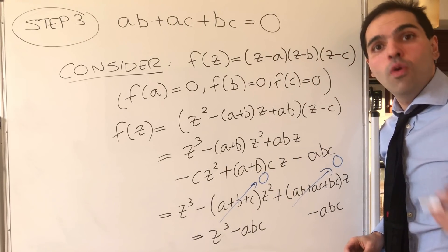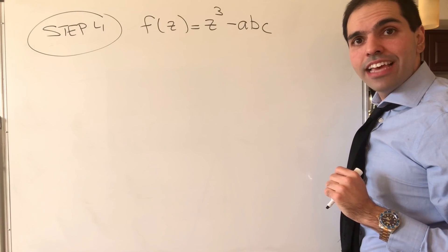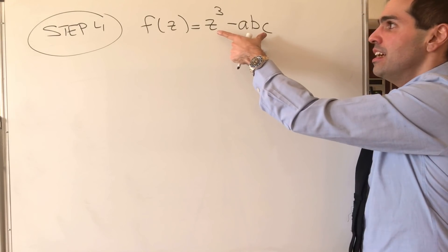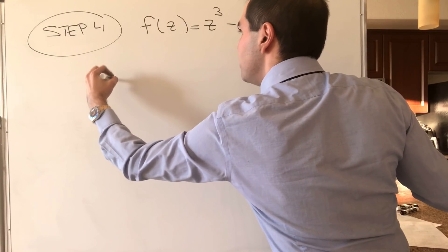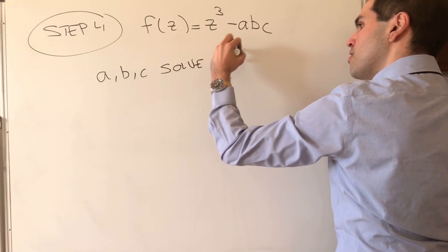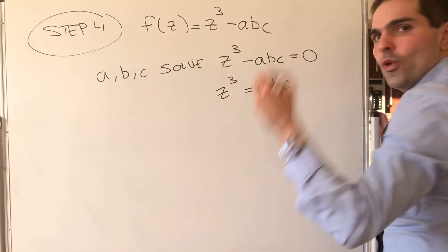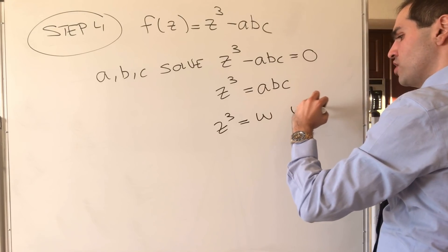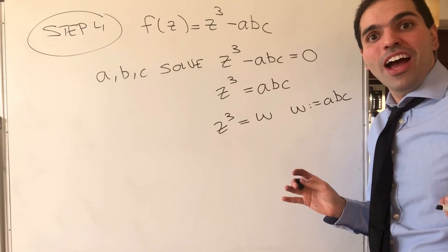And now we'll see why this is so useful. F of Z is just Z cubed minus ABC. Remember: A, B, and C make this equal to zero, so A, B, C are roots of Z cubed minus ABC = 0. In other words, A, B, C solve Z cubed equals ABC, or Z cubed equals omega, where omega is just ABC. And if you know some complex numbers, you're actually done, because A, B, C are essentially like cube roots of unity, and therefore they have to form an equilateral triangle.